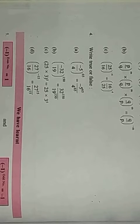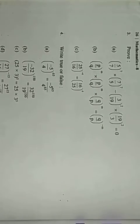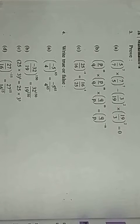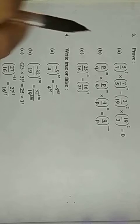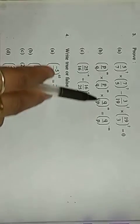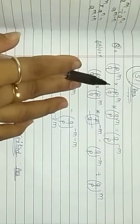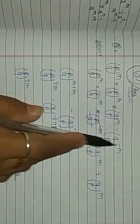Then question number three: 'prove that.' What does proof mean? We have to prove it — like we verified in the first exercise. We are given two sides: left-hand side and right-hand side. We solve both sides, and if both are equal, then it is verified or proved. If both sides are not equal, then it is not proved. I am solving question 3(b) — you will solve A and C on your own.